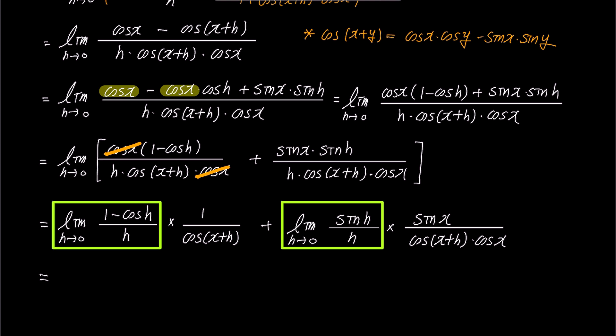Therefore, as h approaches 0, the value of the first green box becomes 0, and that is multiplied by 1 over cosine x. Next, the value of the second green box becomes 1, and as h approaches 0, the term following it simplifies to sine x over cosine x times cosine x.